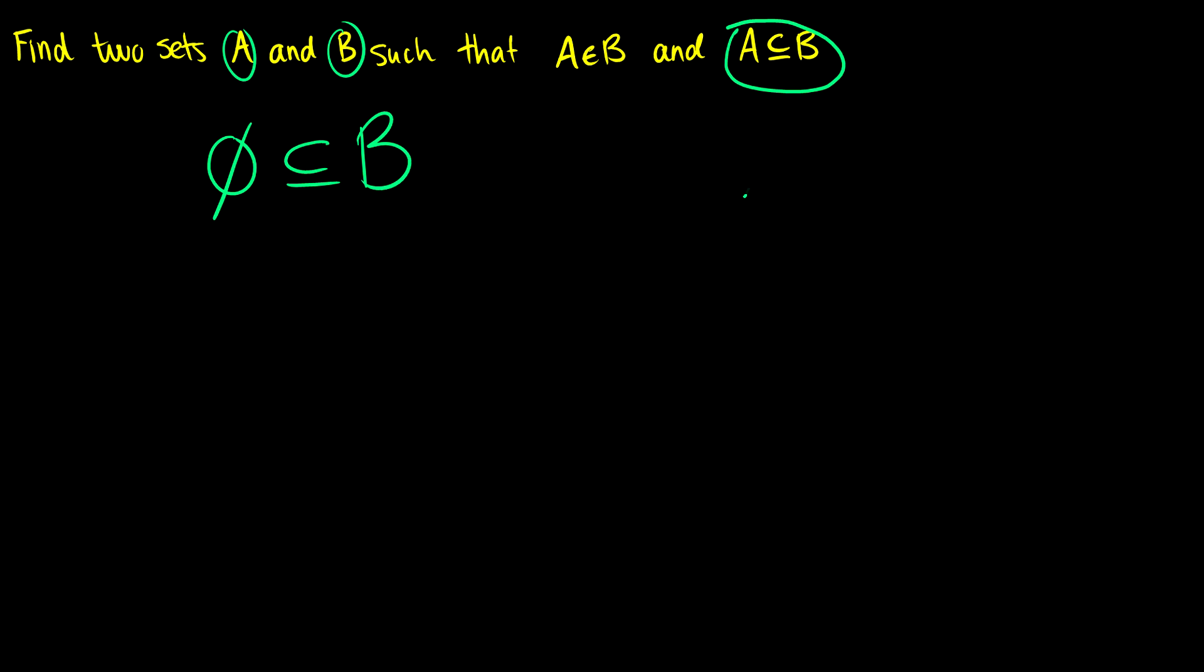So we're going to pick A as the empty set and now using the empty set we're going to find a set B such that the empty set is an element of it. So we know that the empty set is going to be an element of any set that contains the empty set. So we can just define B as the set containing the empty set.